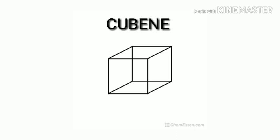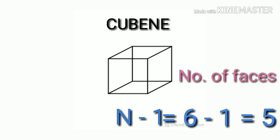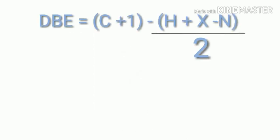For cubane, the degree of unsaturation formula is n minus 1, where n is the number of faces in the cube. The cube has 6 faces, so degree of unsaturation is 6 minus 1 equals 5. For cubane-1-carboxylic acid, there is an additional double bond from the carboxylic acid group, so the total degree of unsaturation is 5 plus 1 equals 6.